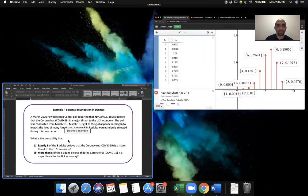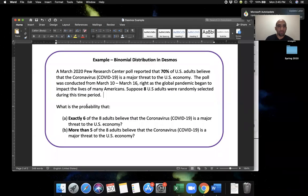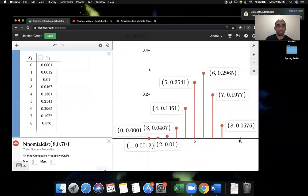Let's go back to the problem for a second. It said, what is the probability that exactly six of the eight adults believe the coronavirus is a major threat to the US economy? Again, the number of trials is eight. The probability of a success on each trial is 70%. A success is basically an adult saying, yes, they believe that the virus is a major threat. Well, the answer to part A is going to be 0.2965, or roughly 30%. There's a 30% chance that six of the eight adults say yes. They think this is a major, the virus is a major threat to the economy.